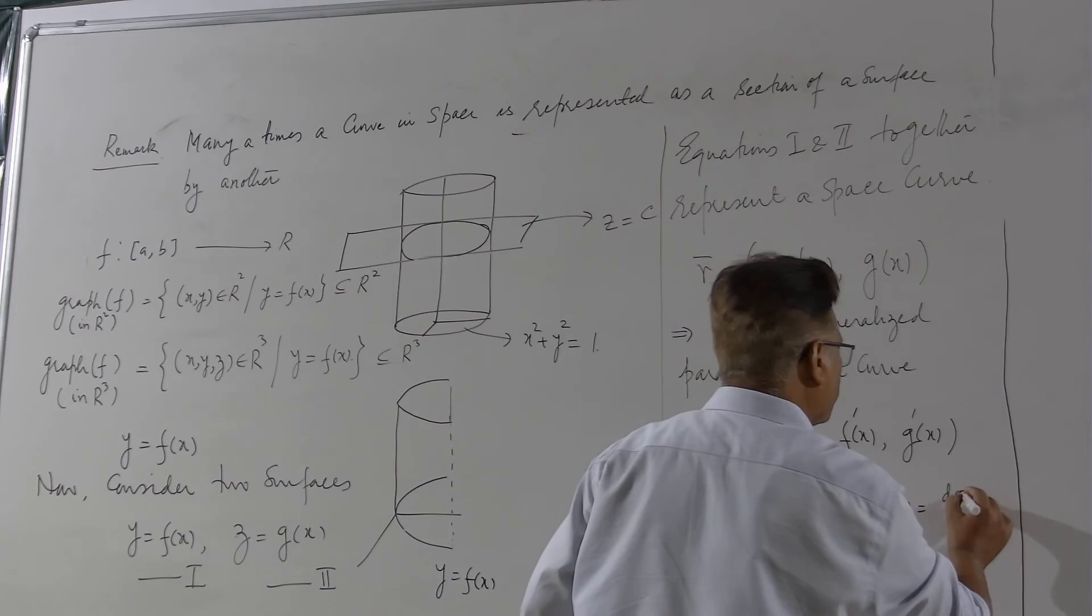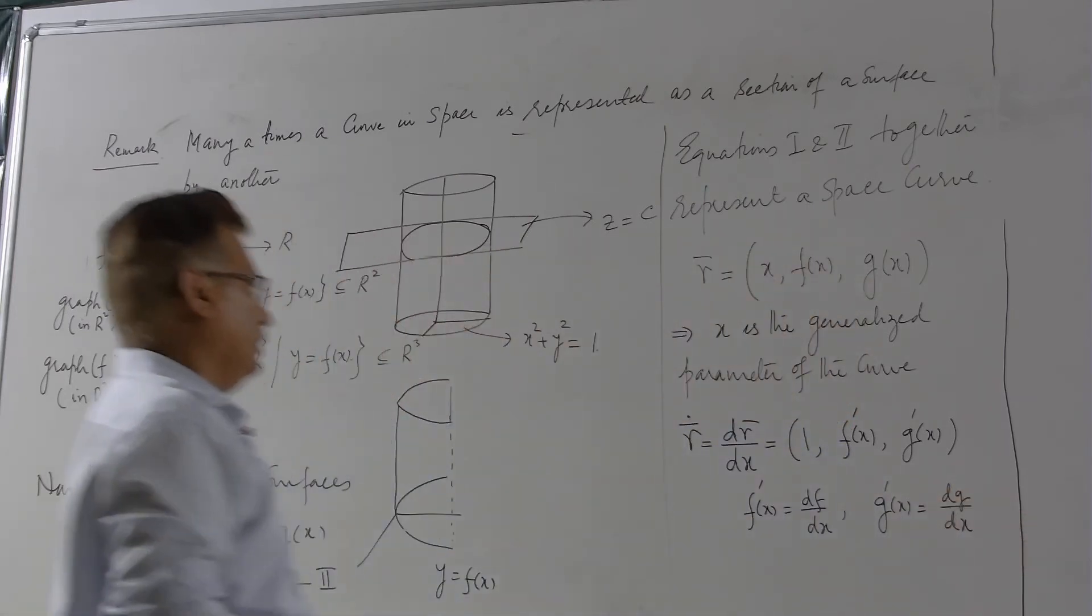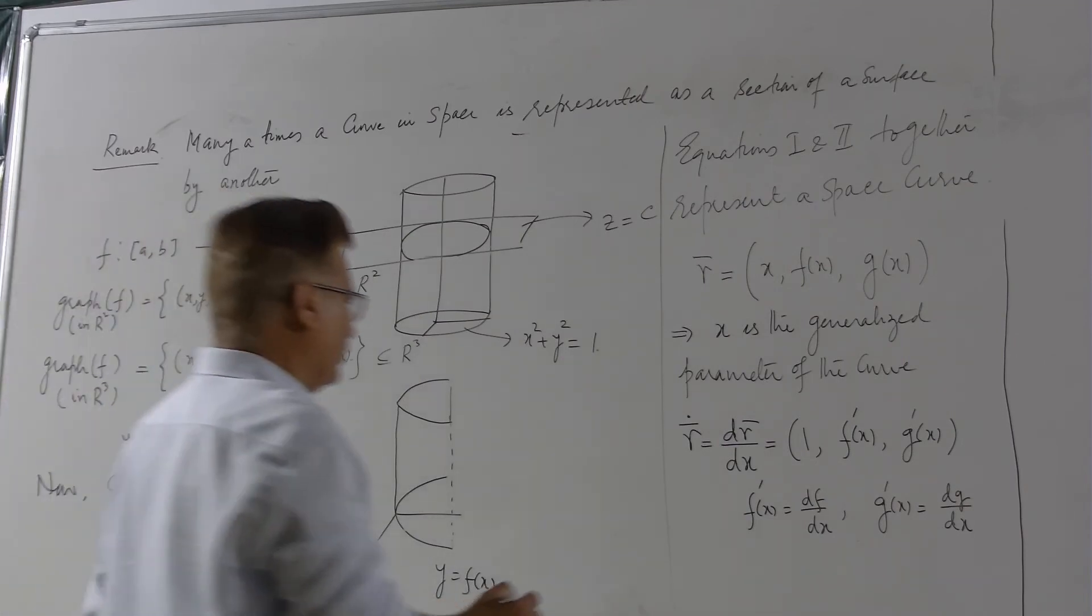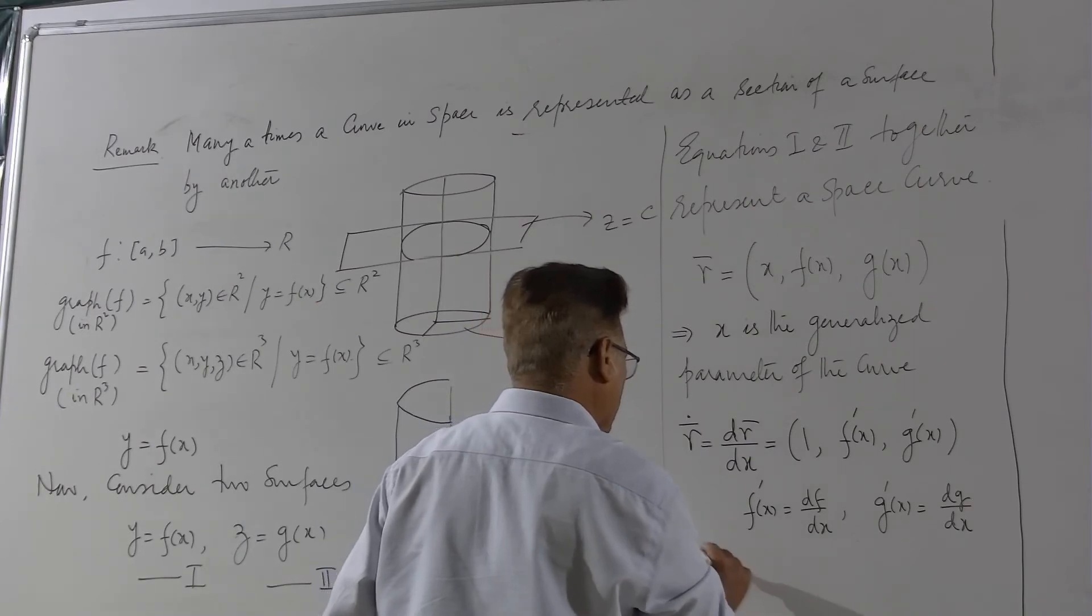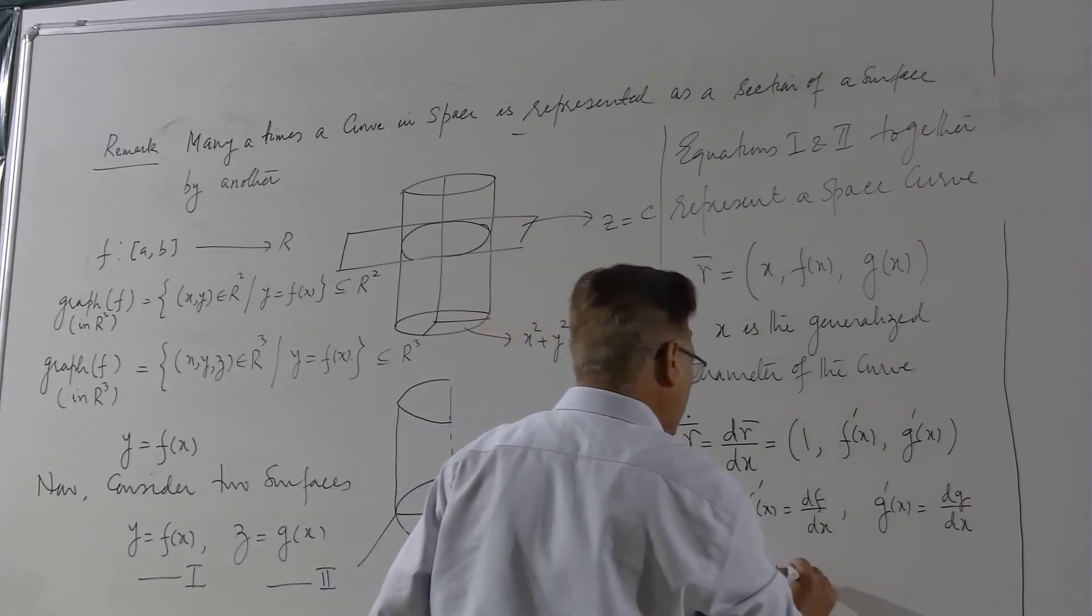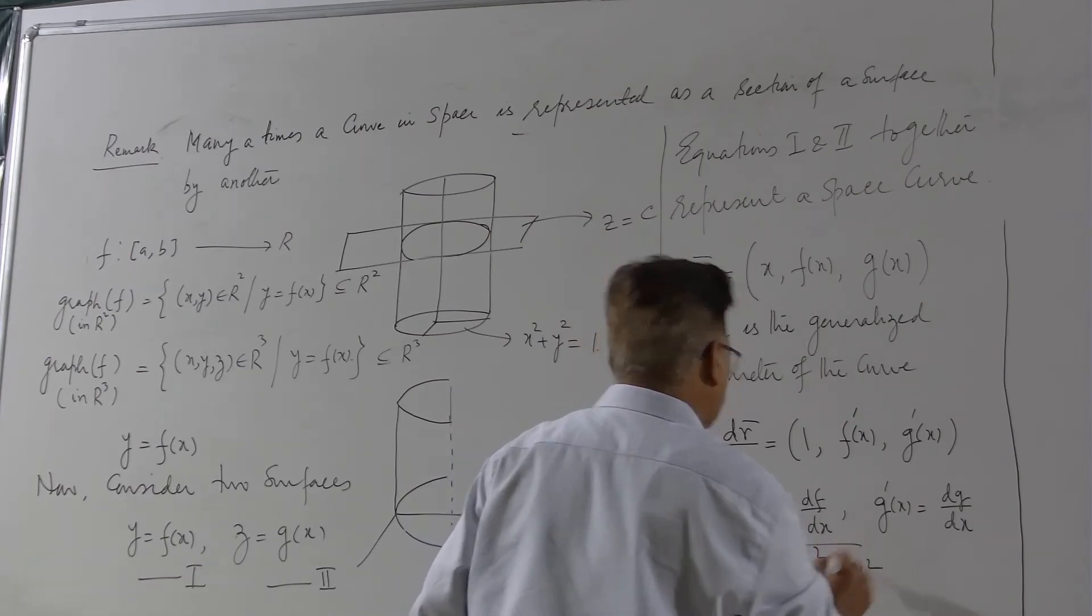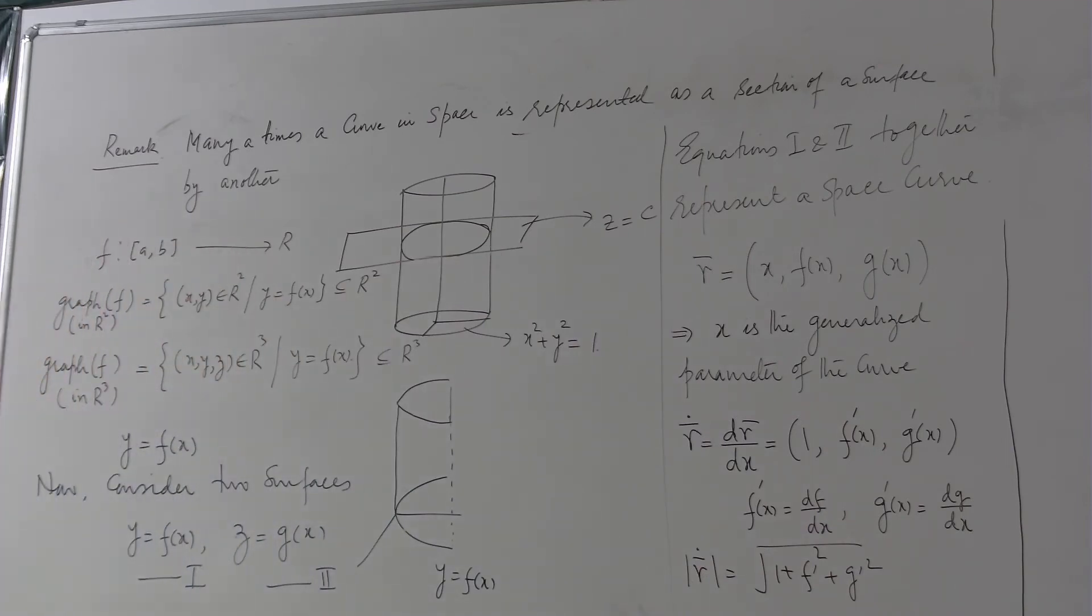Here I am denoting f' by the derivative of f with respect to x and g' means derivative of g with respect to the parameter x. So this is the tangent vector. Unit tangent: just take the modulus. Modulus of r dot is equal to √(1 + (f')² + (g')²). You divide this vector by this scalar that will give you the unit tangent to the space curve y = f(x) and z = g(x).